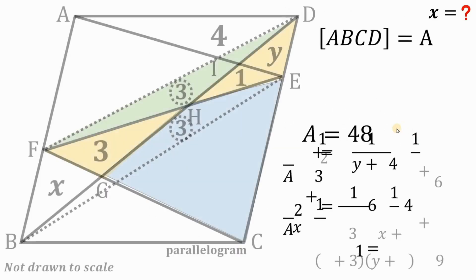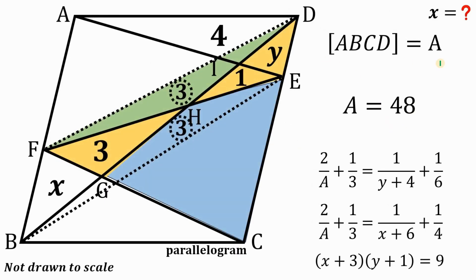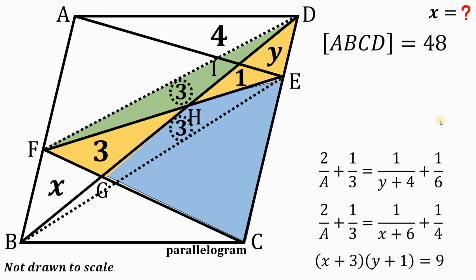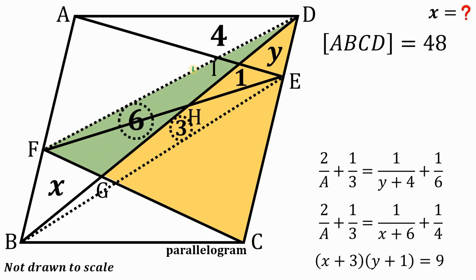Replacing the expression with 1/3: 4 over A equals 1/3 minus 1/4, which is 1/12. Cross-multiplying, the area of the parallelogram equals 48 square units. Going back to the figure, parallelogram ABCD has area 48. The area of triangle CFD is half of 48, which is 24. The green region is 3 + 3 = 6, so the yellow region is 24 minus 6, equal to 18 square units.